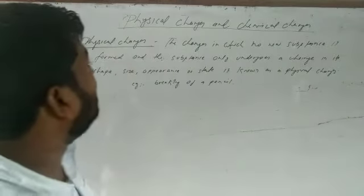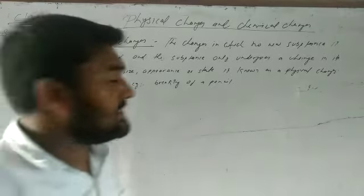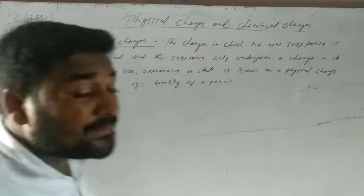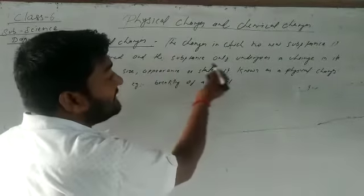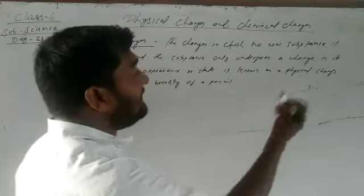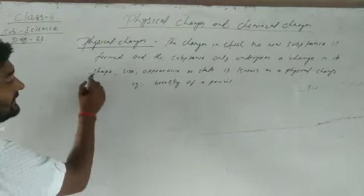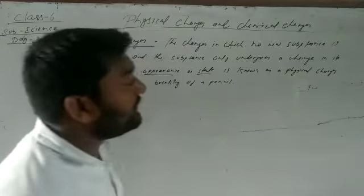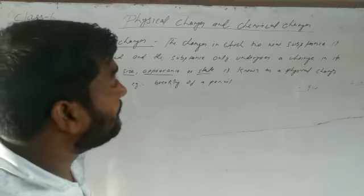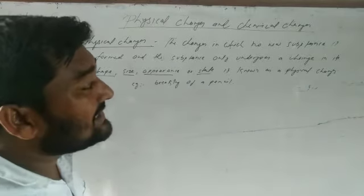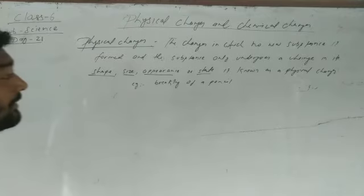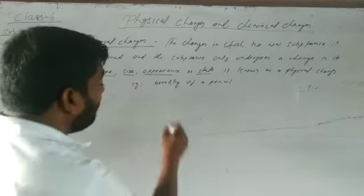Now we will discuss physical changes and chemical changes. Physical changes are changes in which no new substance is formed. The substance only undergoes changes in its size, appearance, or state.